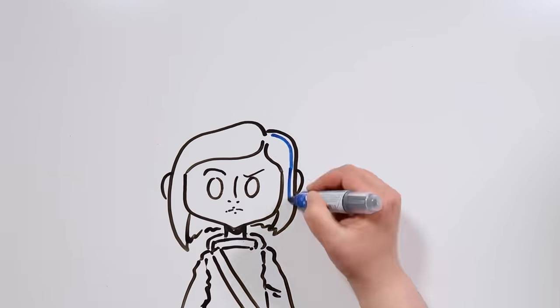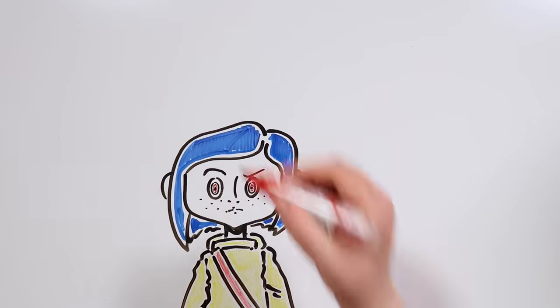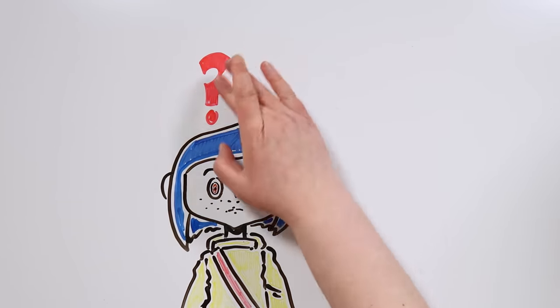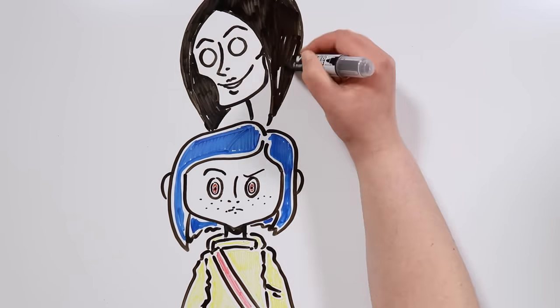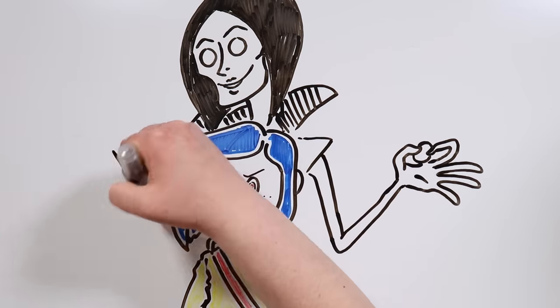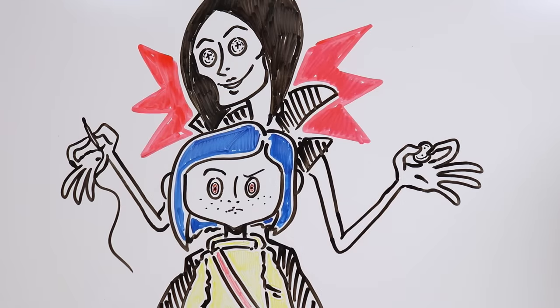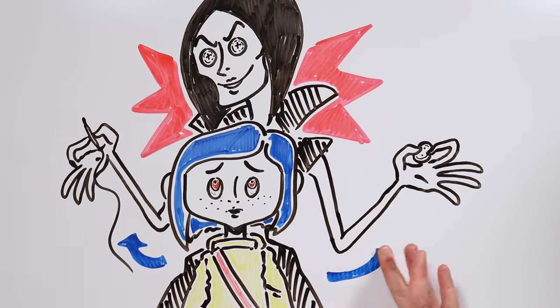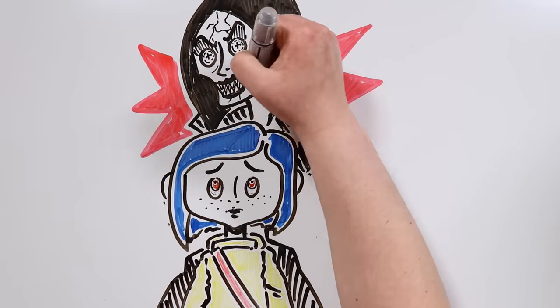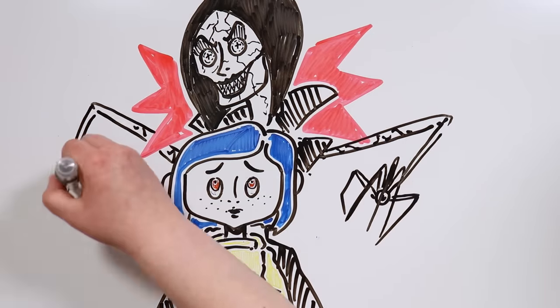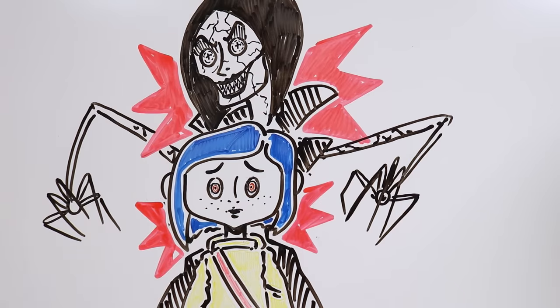Over the next few days, Coraline discovers that many things there just don't make sense, and terrifyingly enough, her mother from that dimension tries to stitch buttons on her eyes too and make her stay in that world forever. And so, Coraline has no other choice than to make a plan to save herself and go back home, since not only her but her entire family are in grave danger.